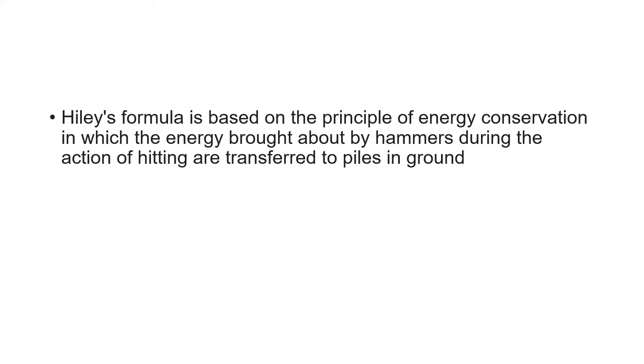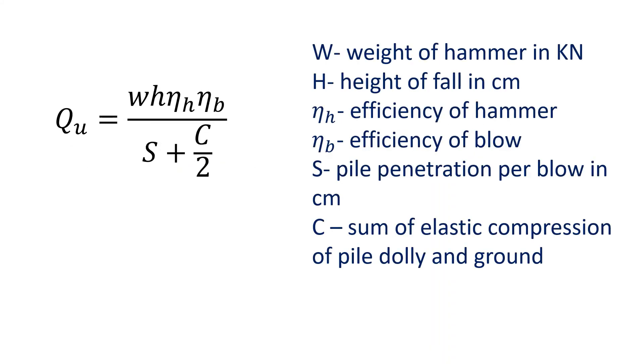How do we use pile capacity? We use the Hiley formula directly. For this formula, the pile capacity is divided by the equation. That is the weight of the hammer W in kilonewtons. You can substitute any unit in that equation. H is the height of fall in centimeters, the height of fall in centimeters.